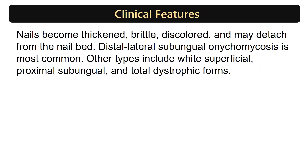Clinical Features: Nails become thickened, brittle, discolored, and may detach from the nail bed. Distal lateral subungual onychomycosis is most common. Other types include white superficial, proximal subungual, and total dystrophic forms.